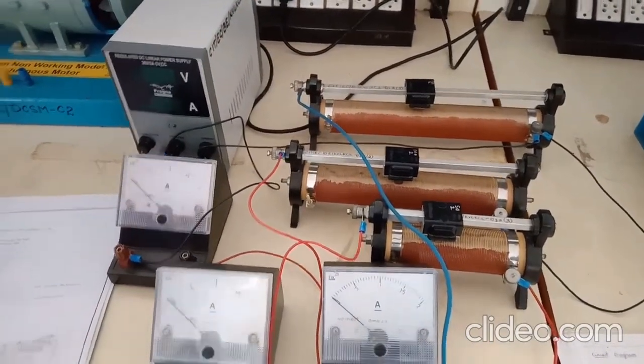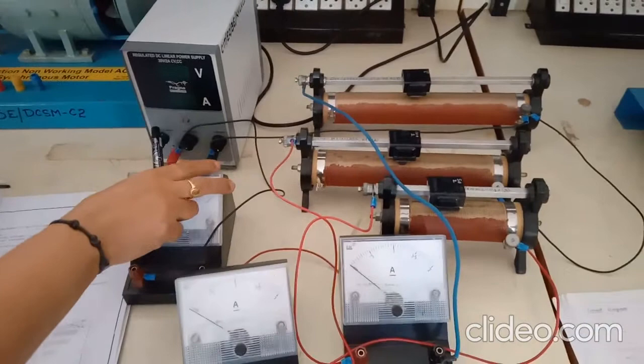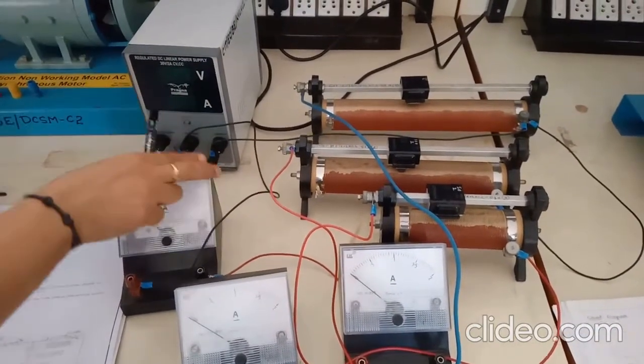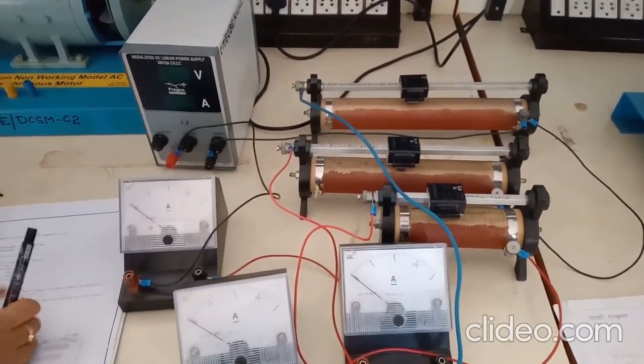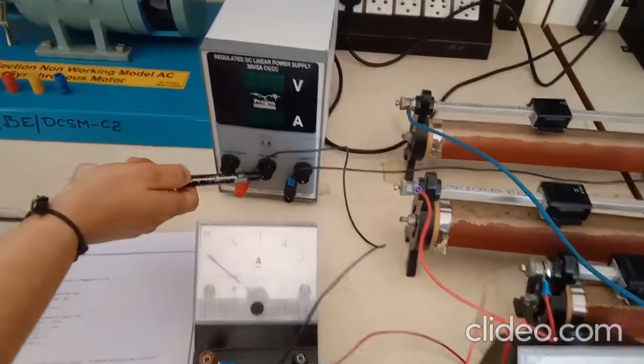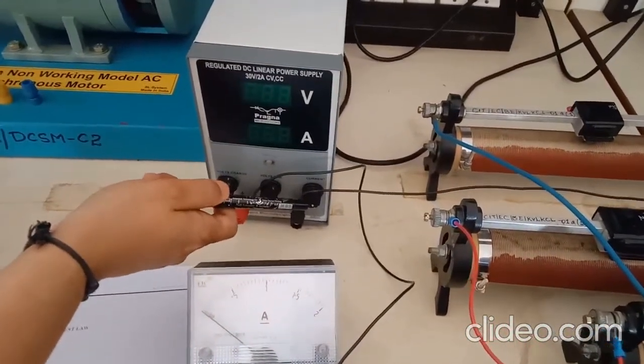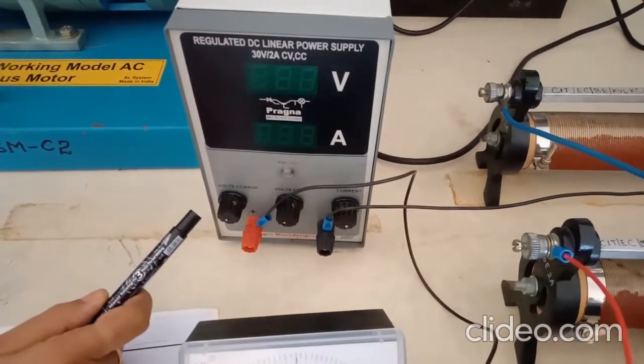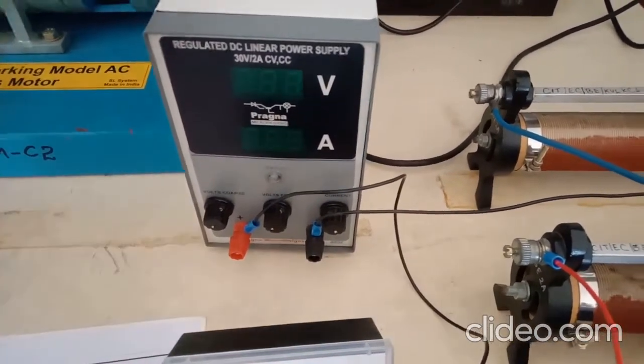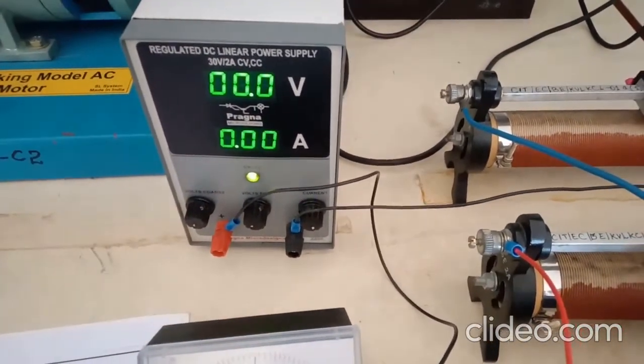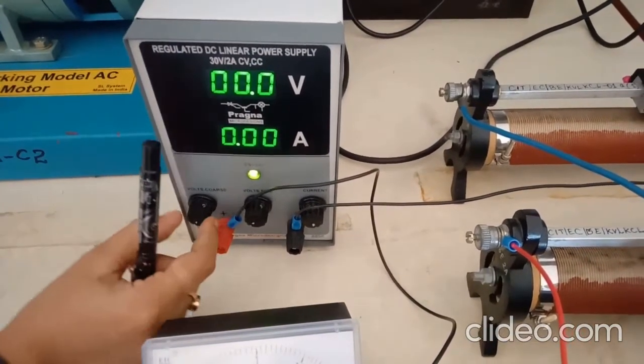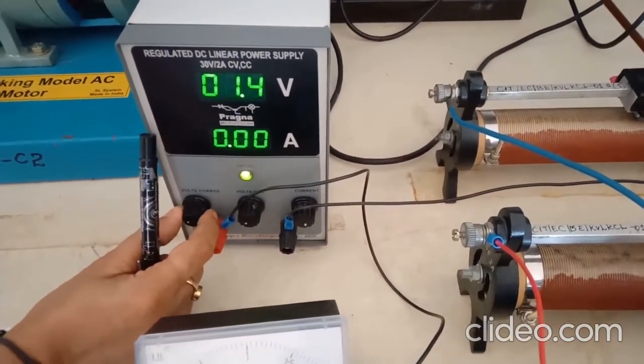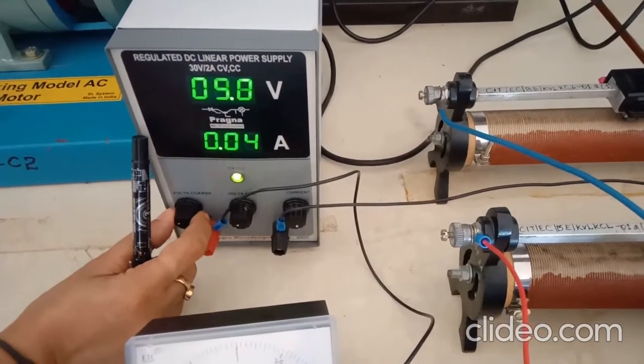Here is the regulated power supply. There is a setting for this. Here it is minimum, current is maximum, and voltage is minimum. We should increase this to set the voltage. Now I am setting it to 10 volts.